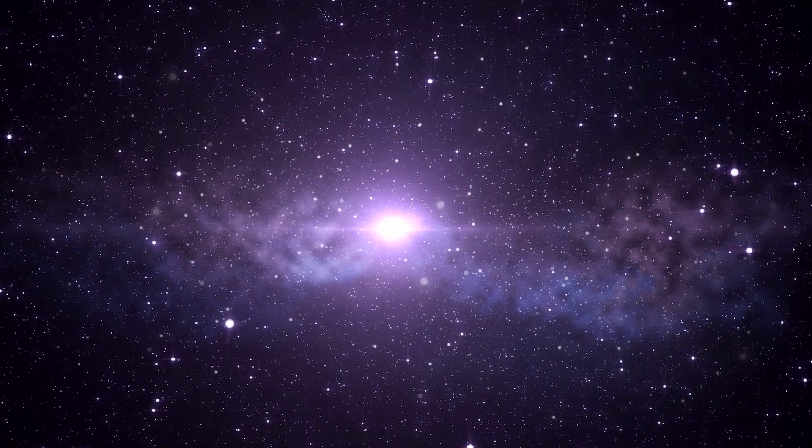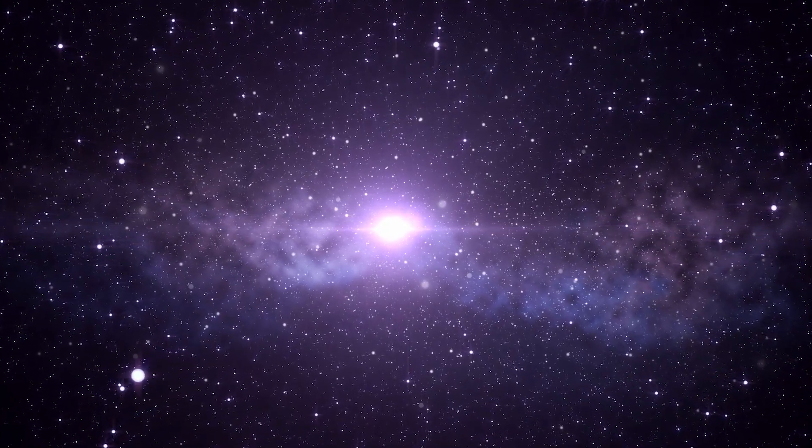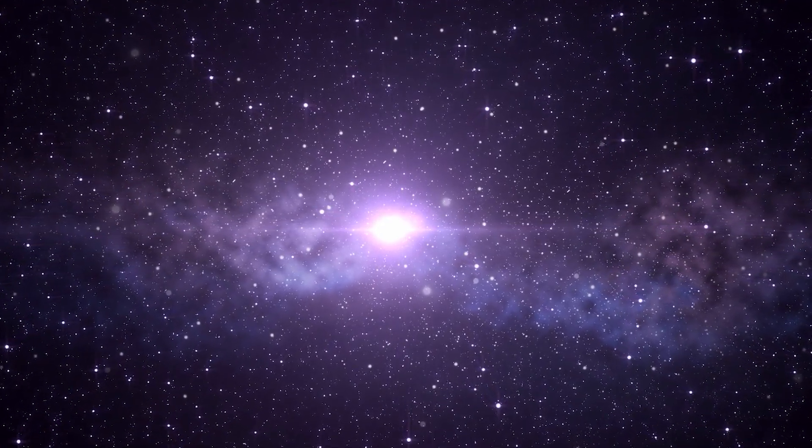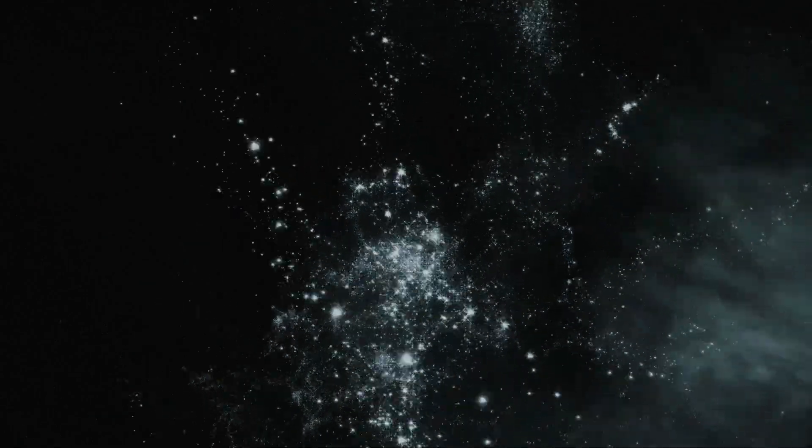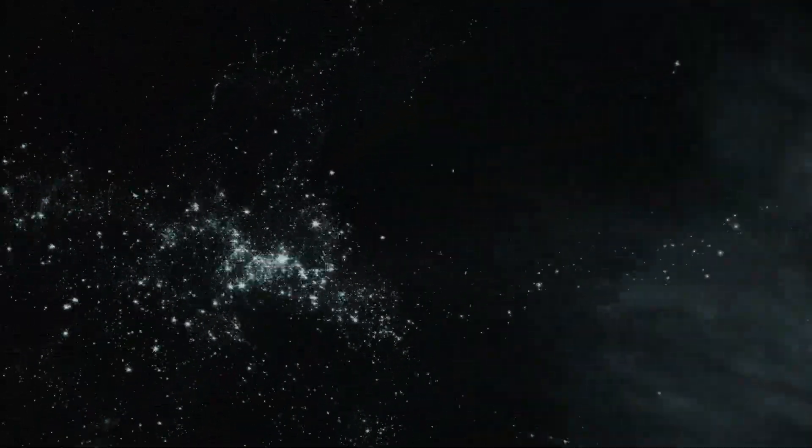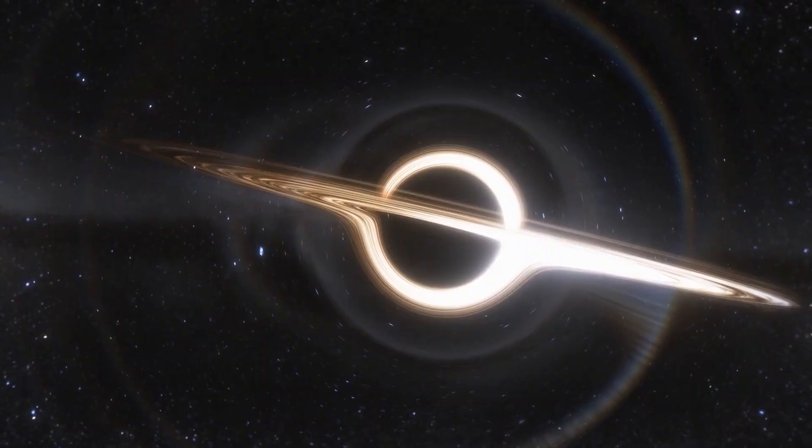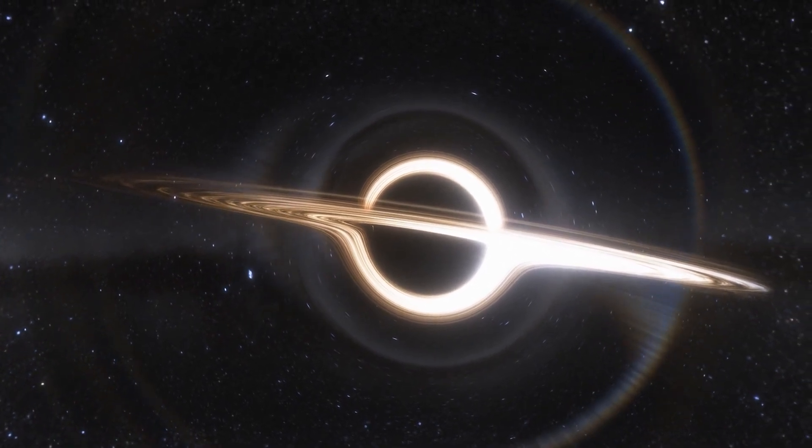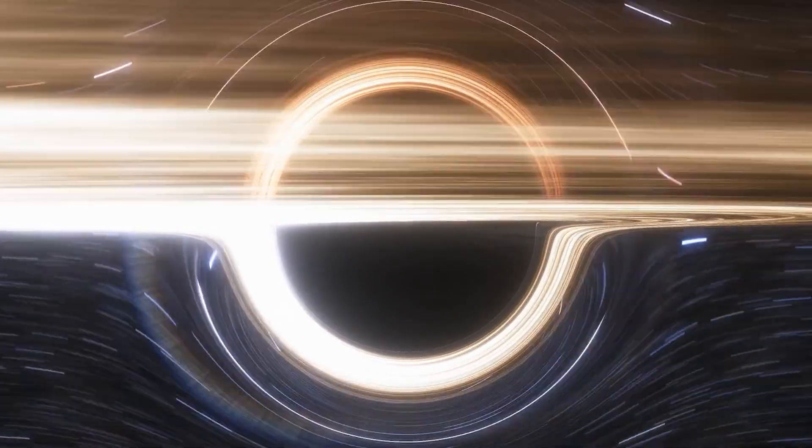The formation background of stellar black holes is largely deciphered. They are formed when a large star reaches the end of its life and ejects its outer shells in an explosive supernova. Thereupon, the remaining stellar core collapses under the weight of its own gravitational pressure into an extremely compact object: a stellar black hole.